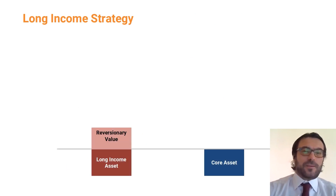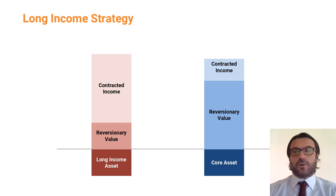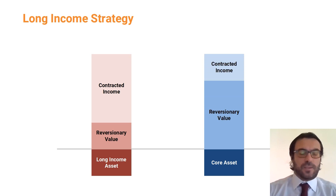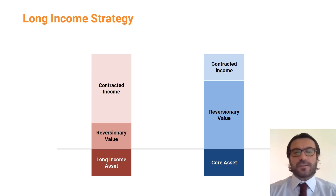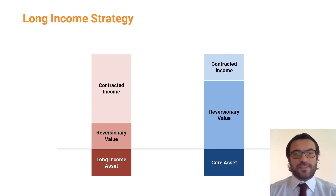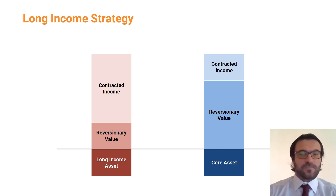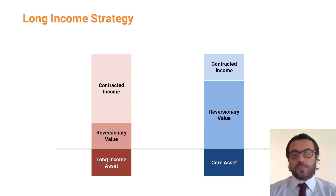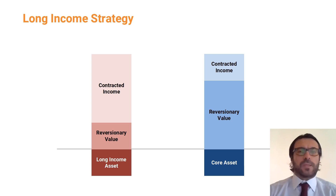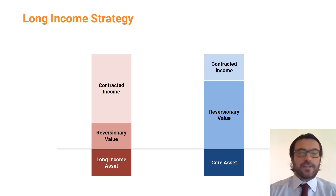One subset of strategies that has emerged over the last 10 years is the long-income strategy. Let me define this strategy and then plot it against the previous strategies. A long-income strategy means to buy a property and lease it for an extremely long period of time. The practice of long leases varies from jurisdiction to jurisdiction.